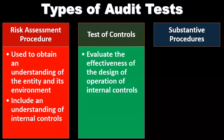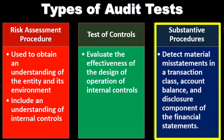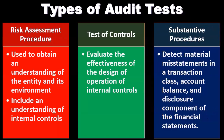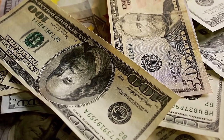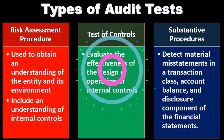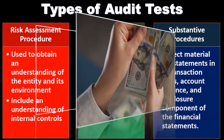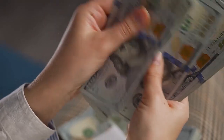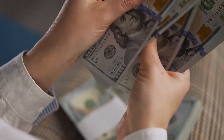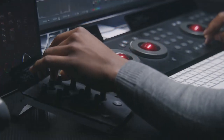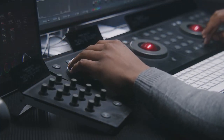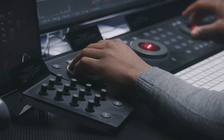Substantive procedures are used to detect material misstatement in transaction classes, account balances, and disclosures in the financial statements. This is usually what most people think of when they think of an audit — you'd just grab those financial statements and start going through the accounts: cash, accounts receivable, and so on. That's basically the substantive approach, which may work for a small audit, but the larger the audit gets, the more we have to depend on internal controls.